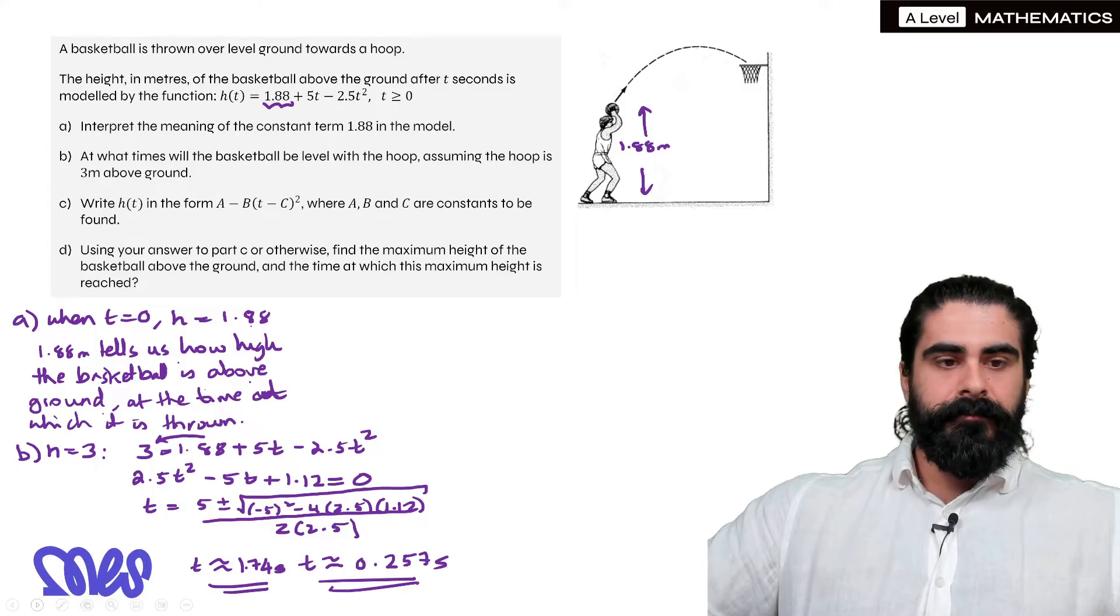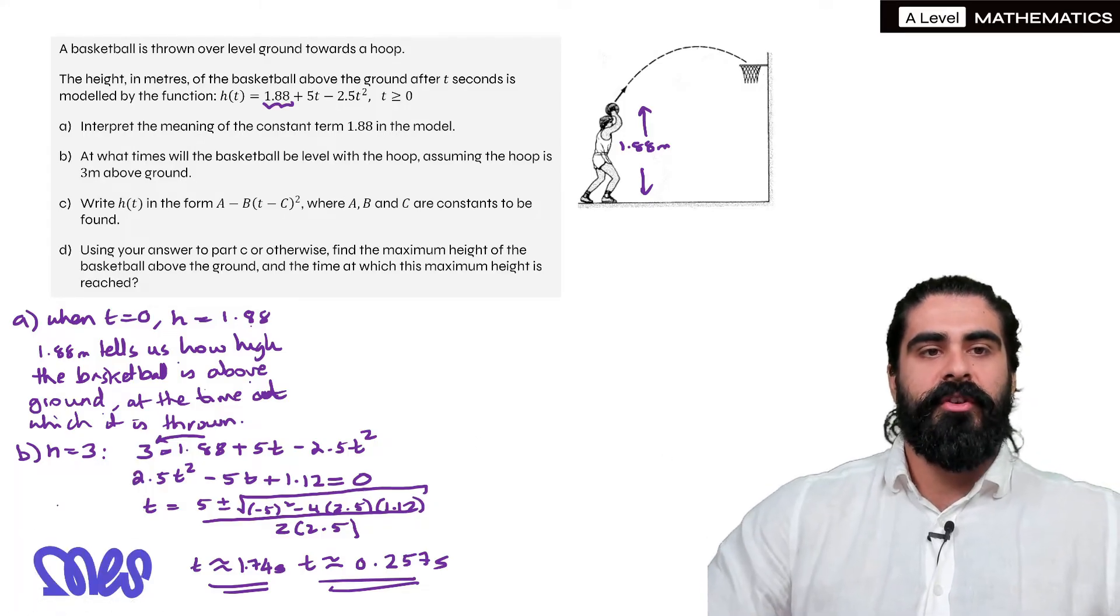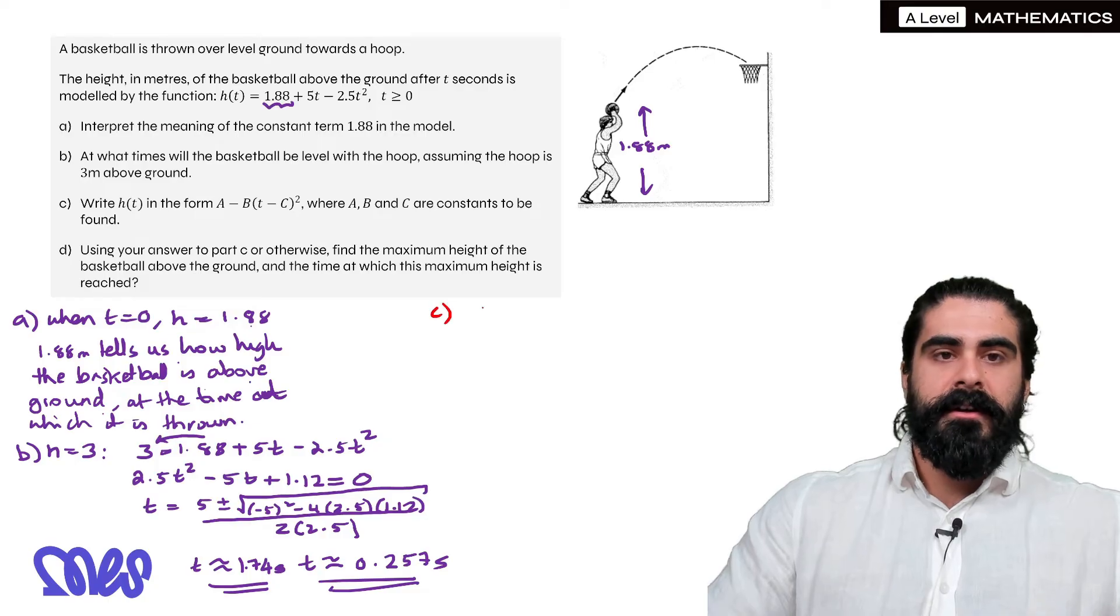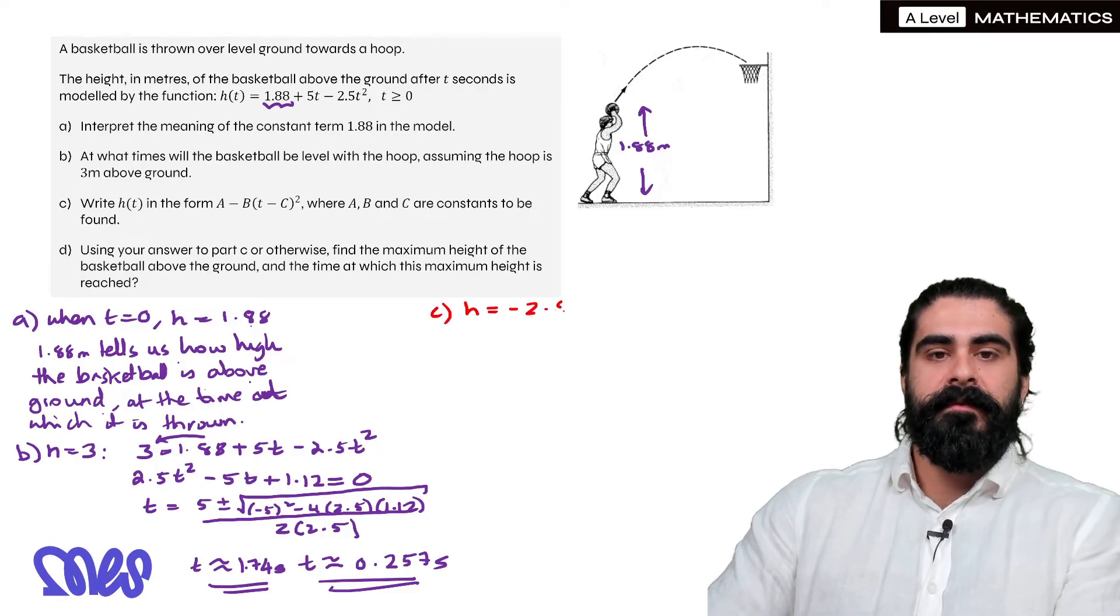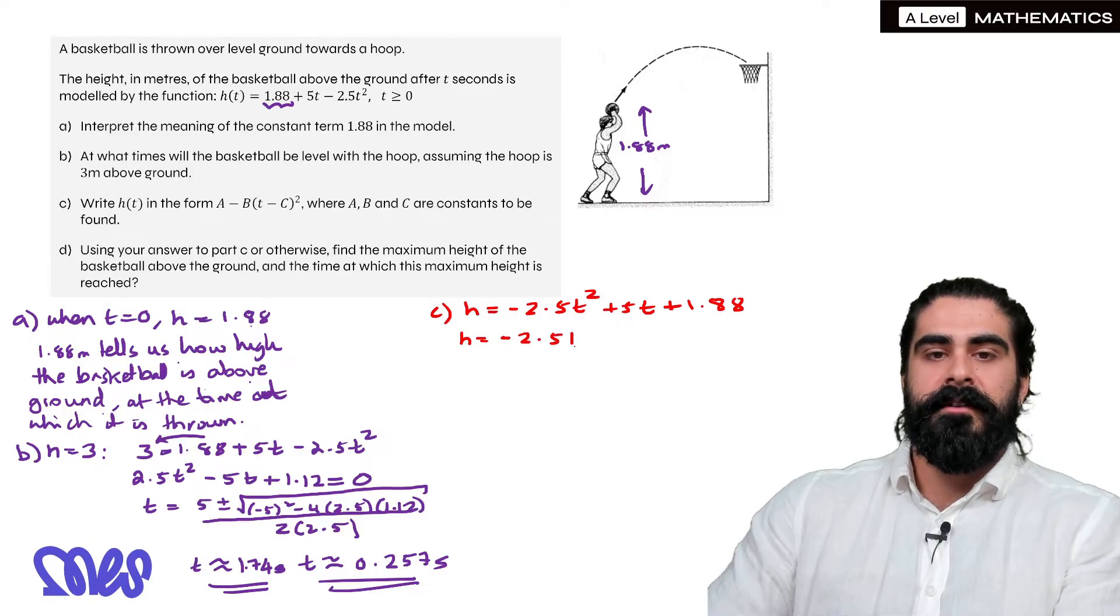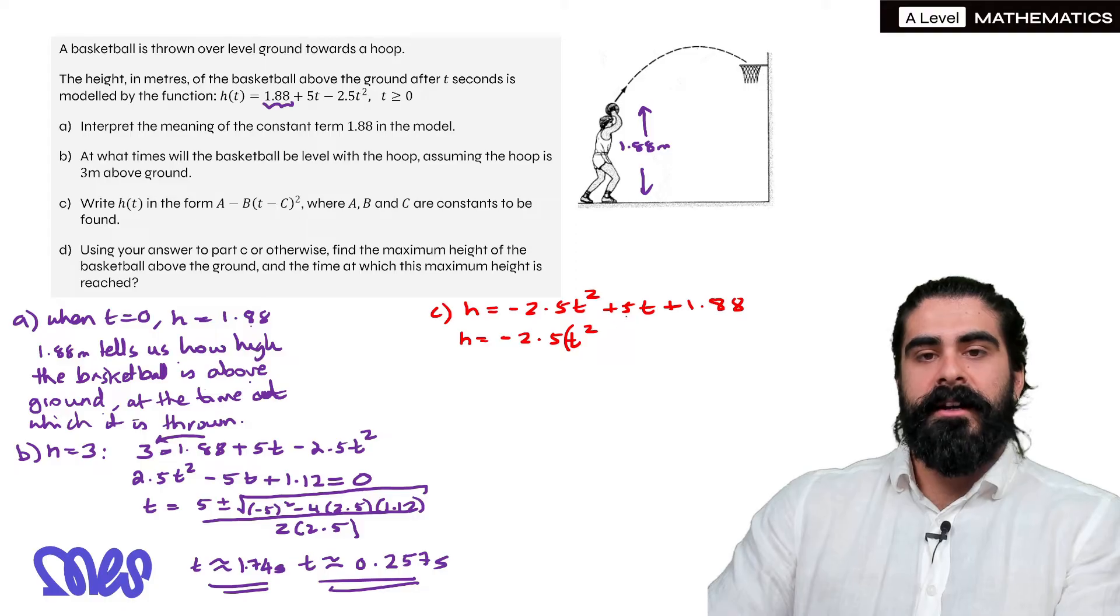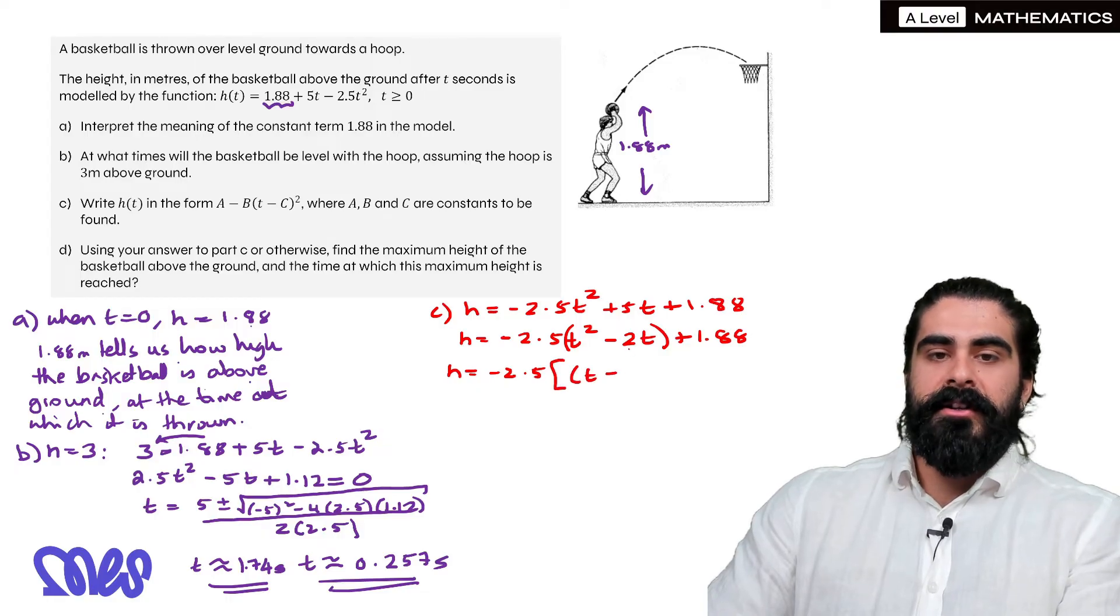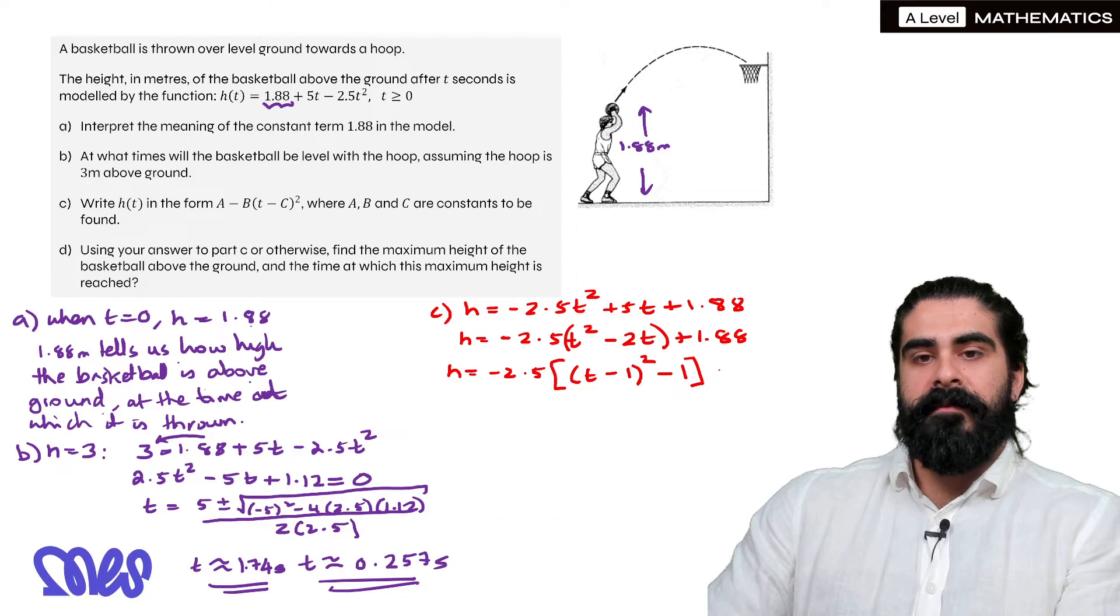Part C. Write h of t in the form a minus b bracket t minus c squared. Now we should know what form that is. That's the completed square form. So first of all we write everything in the correct order. So minus 2.5t squared plus 5t plus 1.88. Then we factorize out the coefficient of t squared from the first two terms only. So we get minus 2.5 bracket t squared, then that will become minus 2t plus 1.88. Then we complete the square on what's inside the bracket only. So now we use a square bracket, t minus half the coefficient would be 1 squared, then we subtract this number squared which is just 1, then we have that plus 1.88.